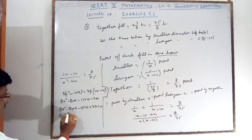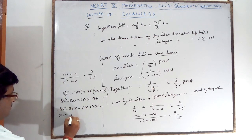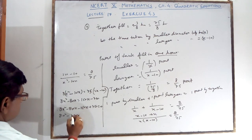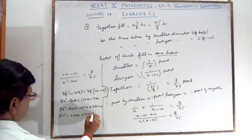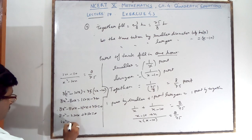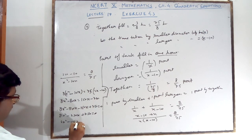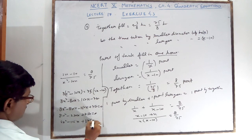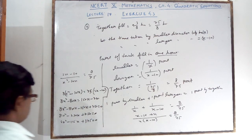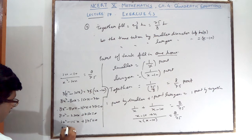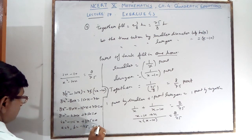Simplifying: 8x squared minus 230x plus 750 is equal to 0. Dividing by 2: 4x squared minus 115x plus 375 is equal to 0. By using the quadratic formula, A is equal to 4, B is equal to minus 115, C is equal to 375.